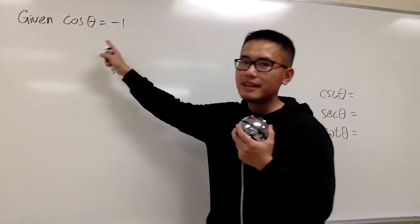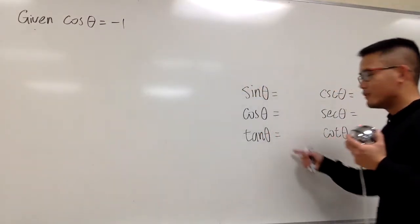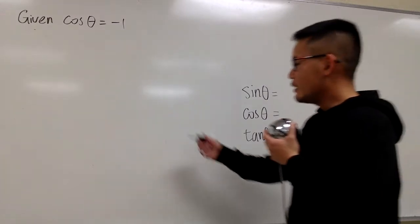All right, we're given that cosine theta is equal to negative 1, and we have to figure out the rest. So right here, let's see,